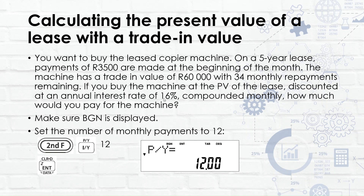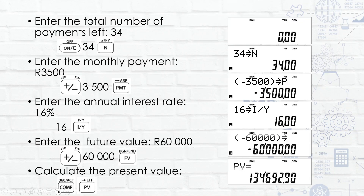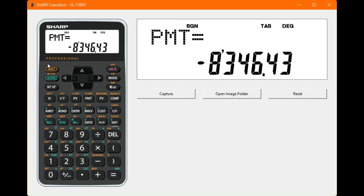If you buy the machine at the present value of the lease discounted at an annual interest rate of 16% compounded monthly, how much would you pay? Ensure BGN is displayed — since the previous question used it, no need to reset. Set monthly payments, work out remaining payments, enter monthly payment amount, interest rate, future value, and compute present value.